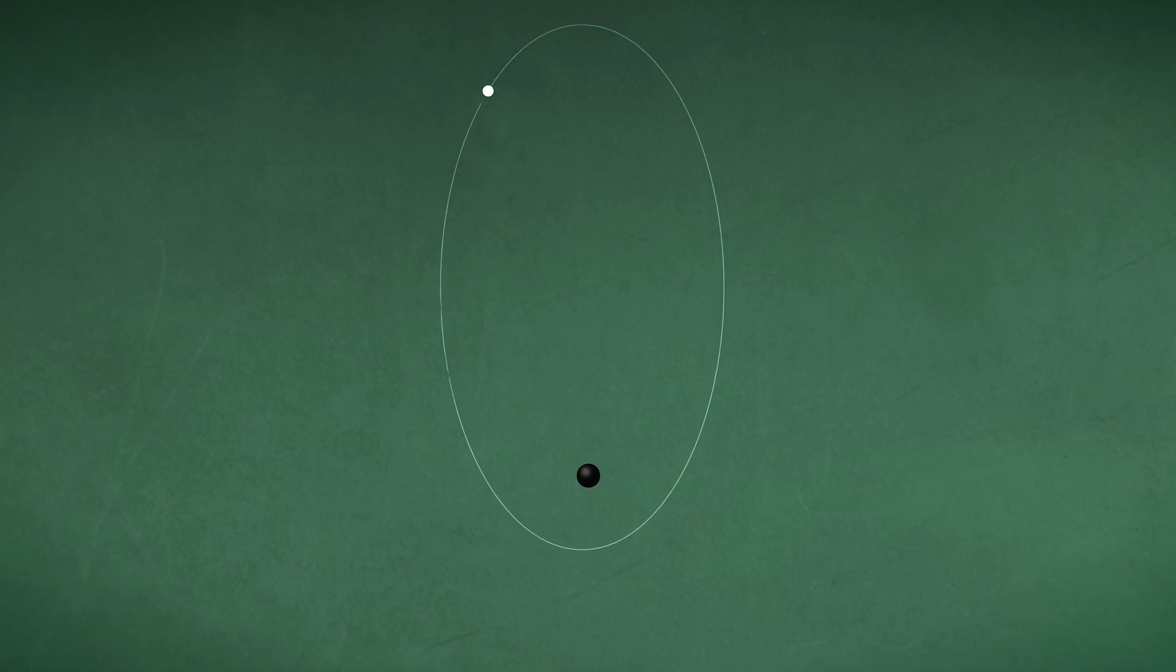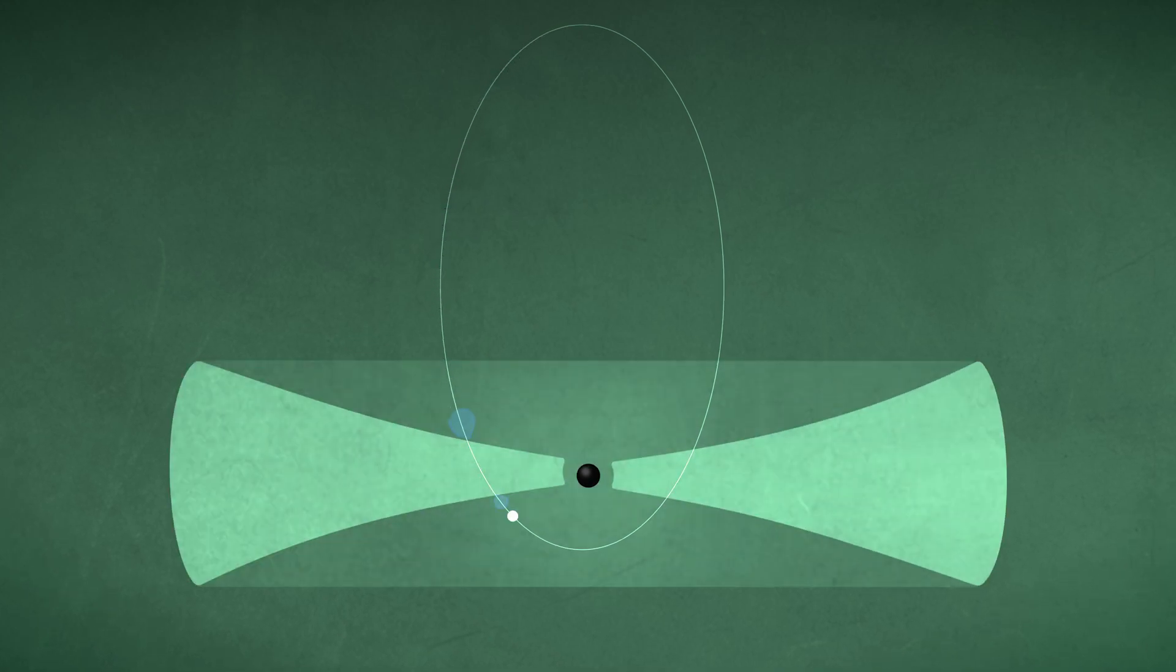Some scientists think QPEs occur when a lower-mass object orbits a supermassive black hole in the center of a galaxy. When the smaller object passes through the disk of gas around the monster black hole, it produces a cloud of debris that causes an X-ray outburst.